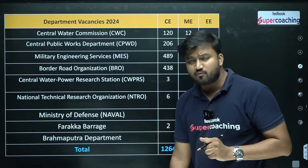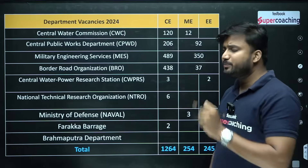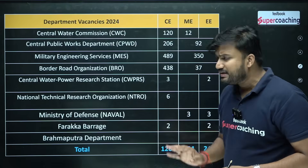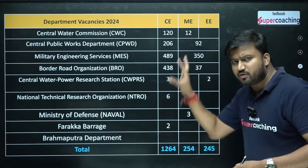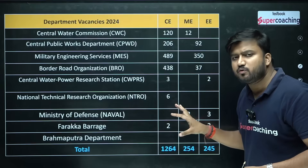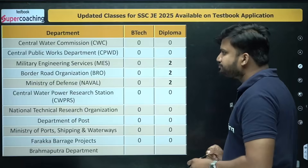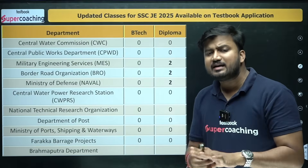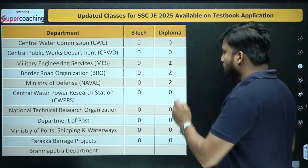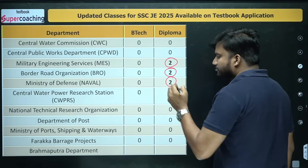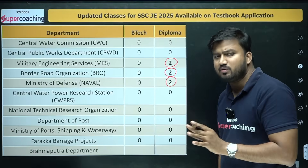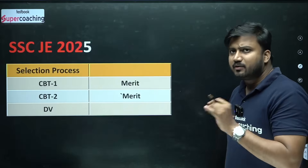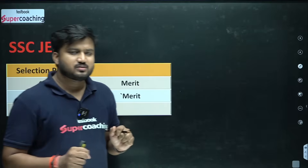Departments in SSC JE include Central Water Commission, CPWD, MES, BRO, CWPRS, NTRO, Naval, Farakka Barrage Project, and Brahmaputra department. Degree candidates do not require any experience in any department. Diploma candidates require two years of experience in only three departments: MES, BRO, and Ministry of Defense. In all other departments, diploma holders also do not require any experience.